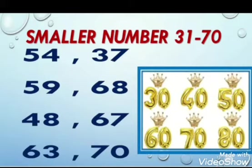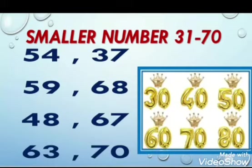Now we will check which tens comes first in counting. We will read the tens — 30 is in this example, yes! So 37 is the smaller number than 54, because 37 comes first in counting, then 54. So 37 is the smaller number.